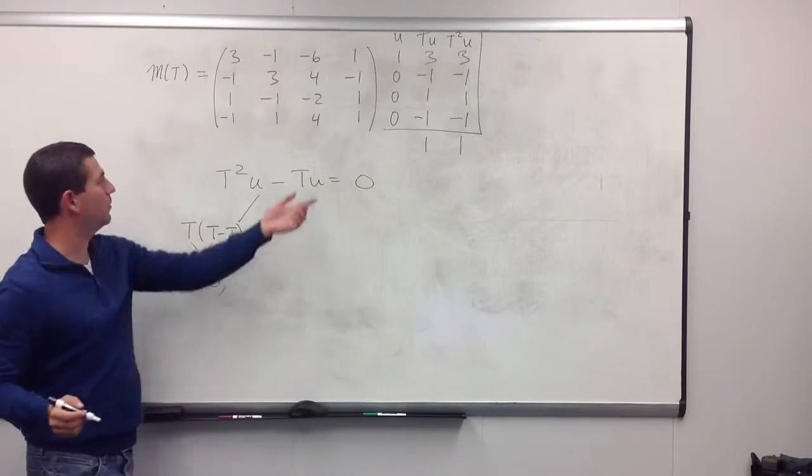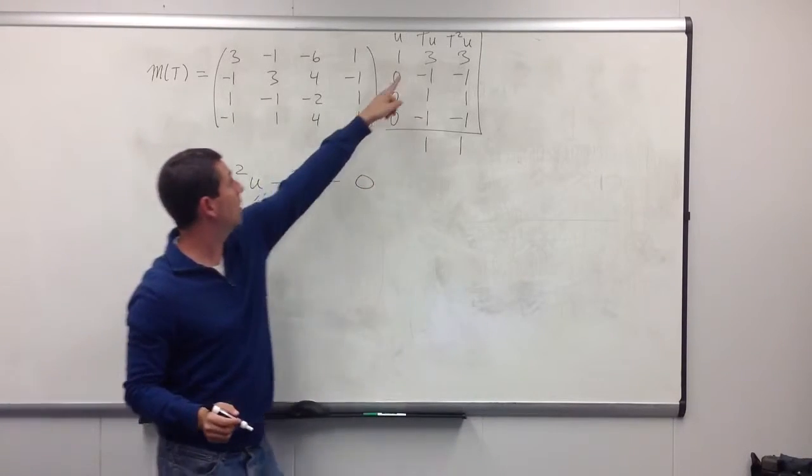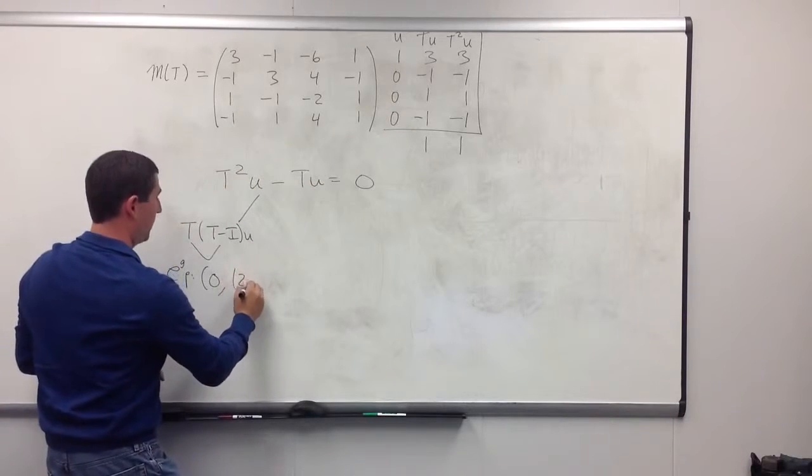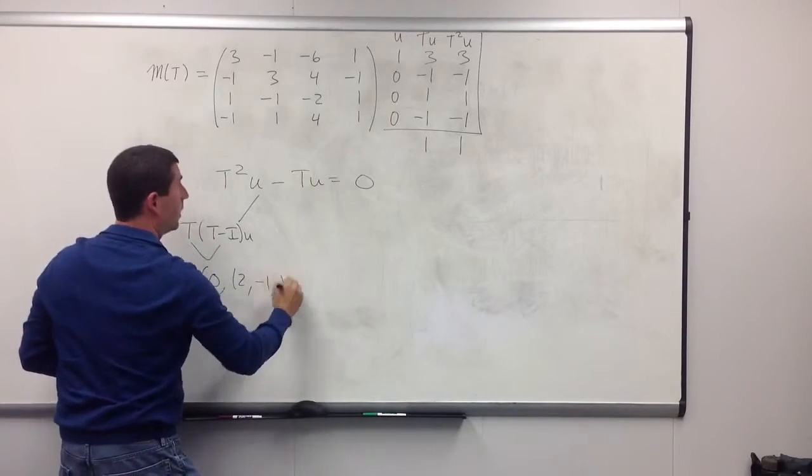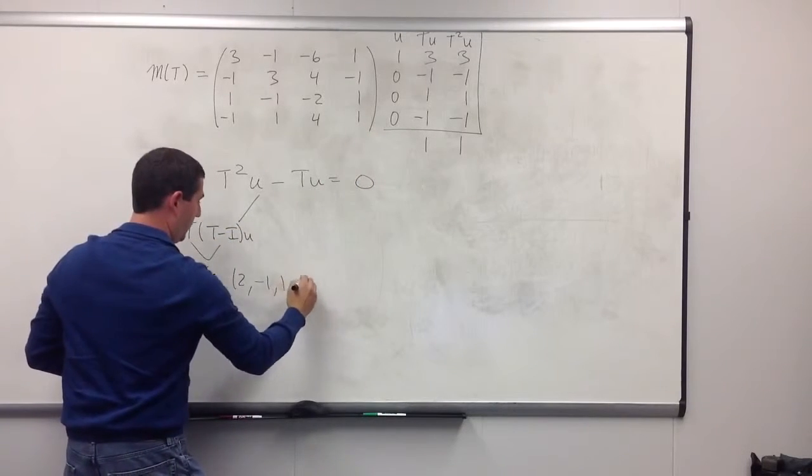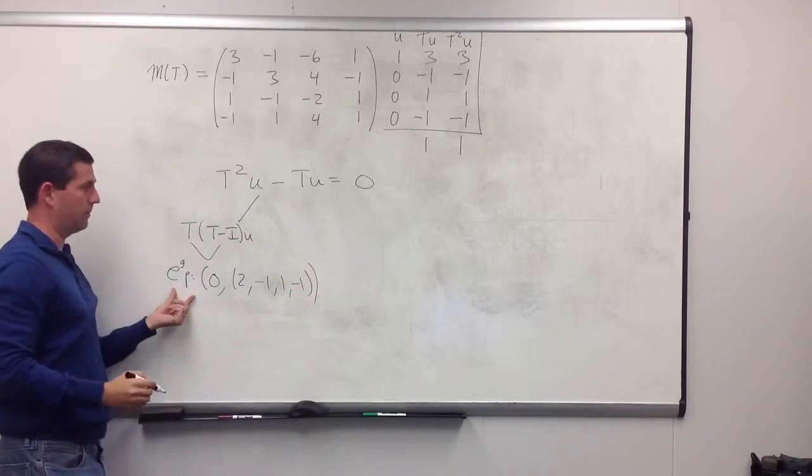So, we get an eigenpair with eigenvalue 0 and eigenvector T minus I times u. That we can do pretty easily. So, that's just Tu minus u. So, we're going to get 2, negative 1, 1, negative 1 minus 0 is negative 1. Okay, so we have our first eigenpair.